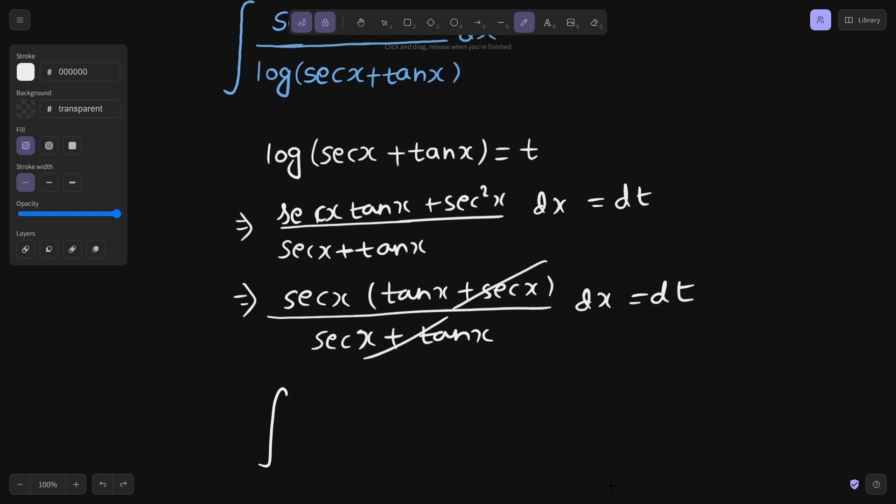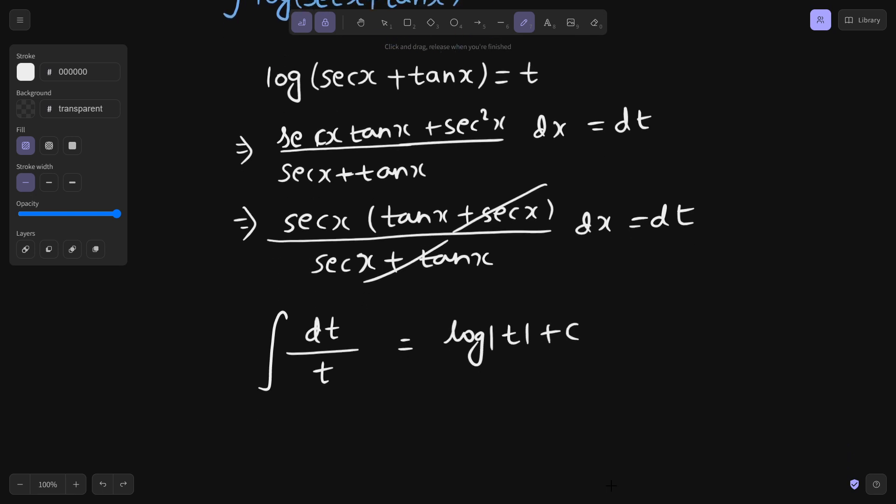So numerator you can replace by dt. In denominator you have what we have assumed as t. Integration of dt by t is nothing but log mod t plus c. And what was your t? It was log of secant x plus tan x plus a constant c.